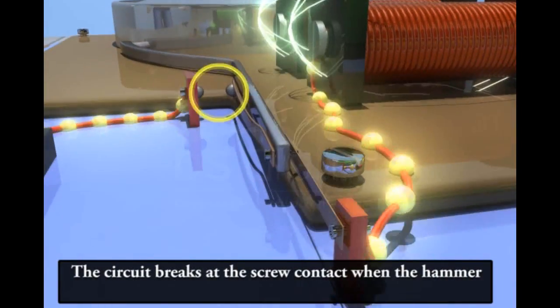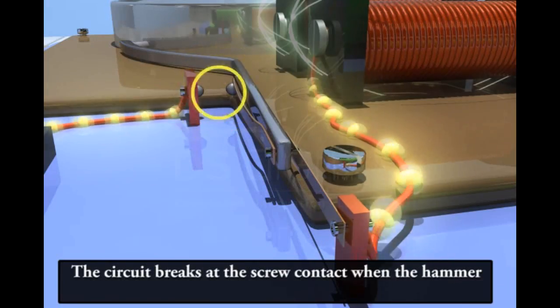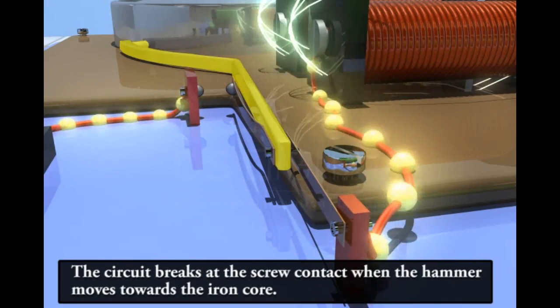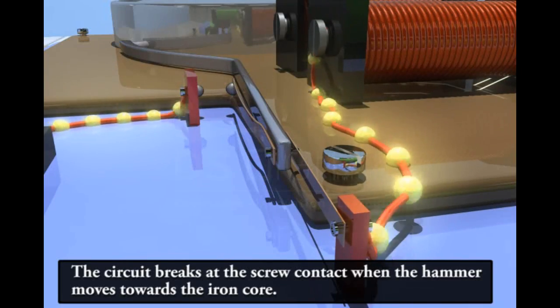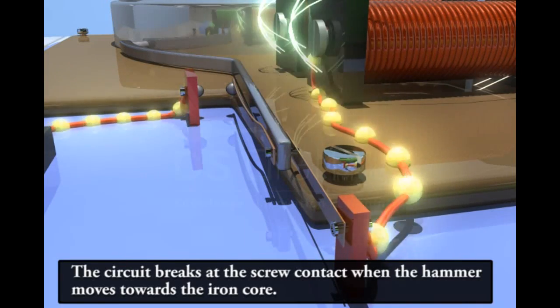The circuit breaks at the screw contact when the hammer moves towards the iron core. At this point, the iron core ceases to be an electromagnet.